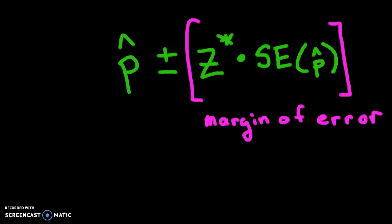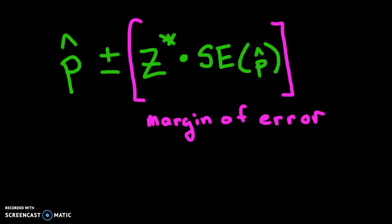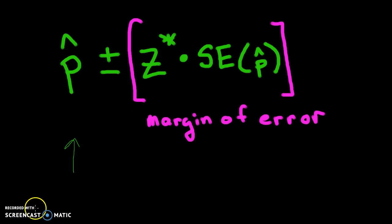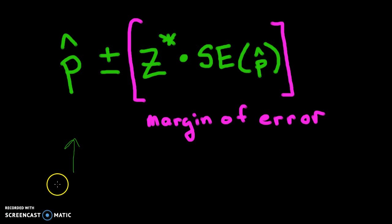To summarize: the formula for a confidence interval for proportions starts with your sample proportion P-hat, and then you go up and down your margin of error. The margin of error is calculated by taking Z-star times your standard error. Z-star is based upon how confident you want to be. The most common is 95% confidence, which means Z-star equals 1.96 — so the margin of error is 1.96 standard errors.